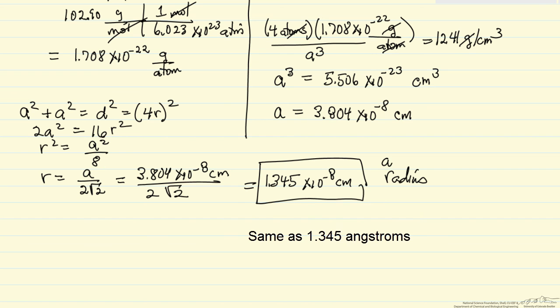So this is the atomic radius of rhodium that we calculated from the density and essentially from geometry.